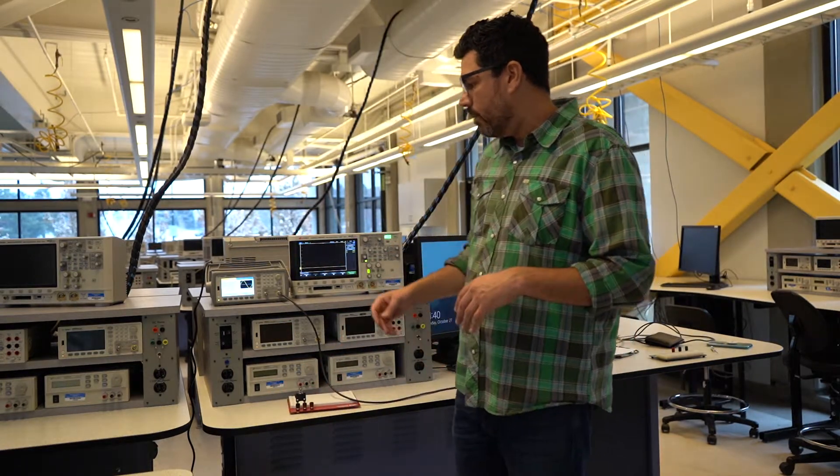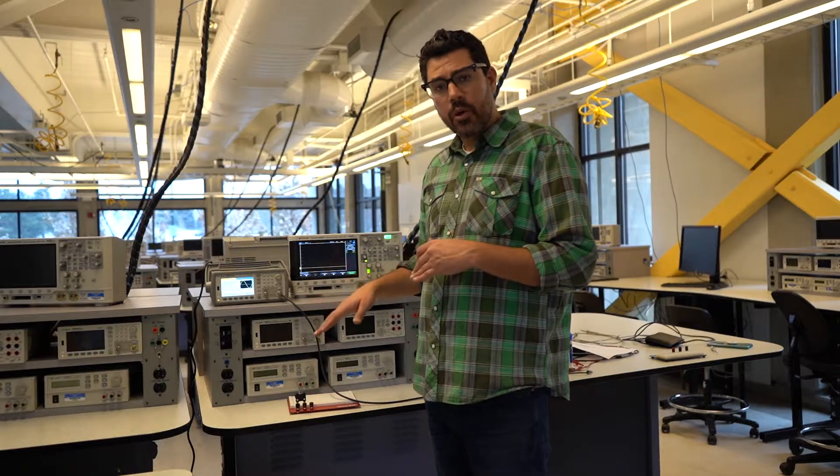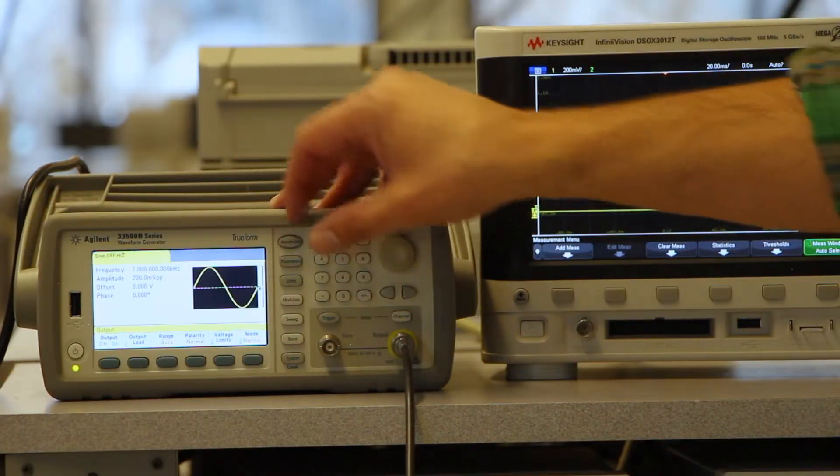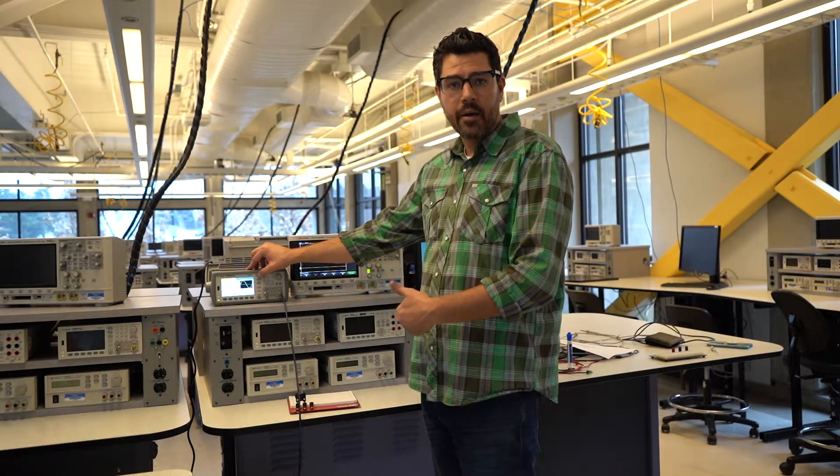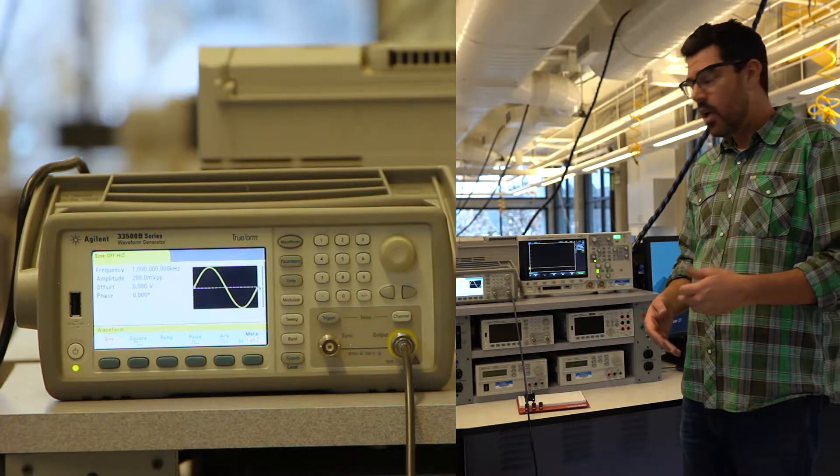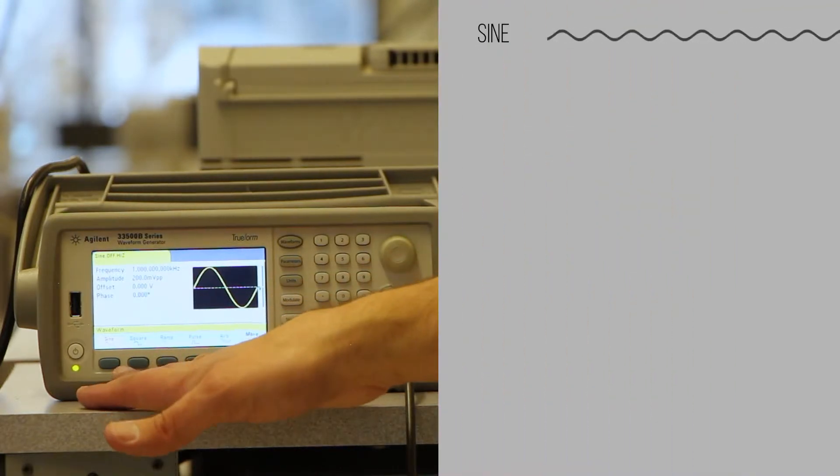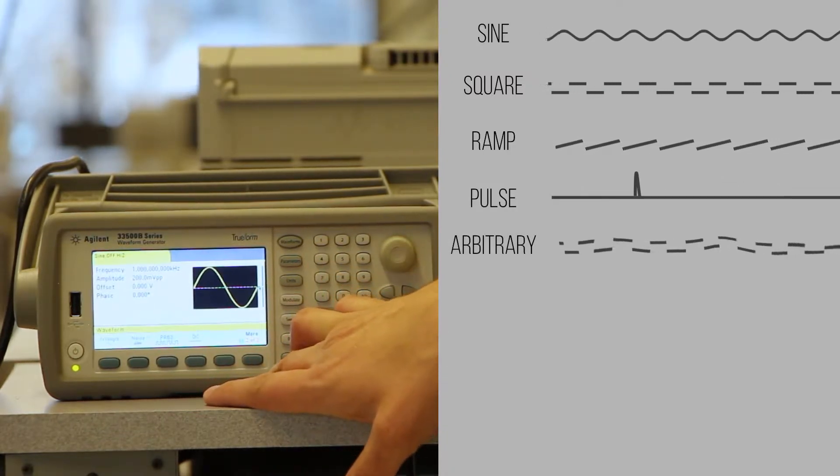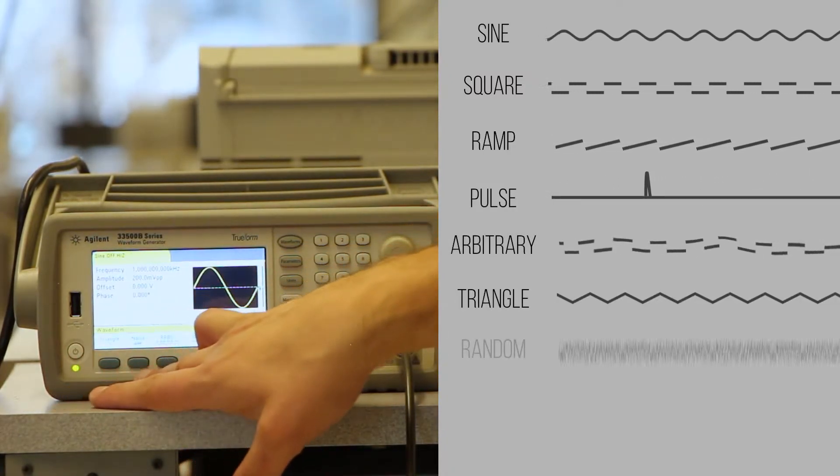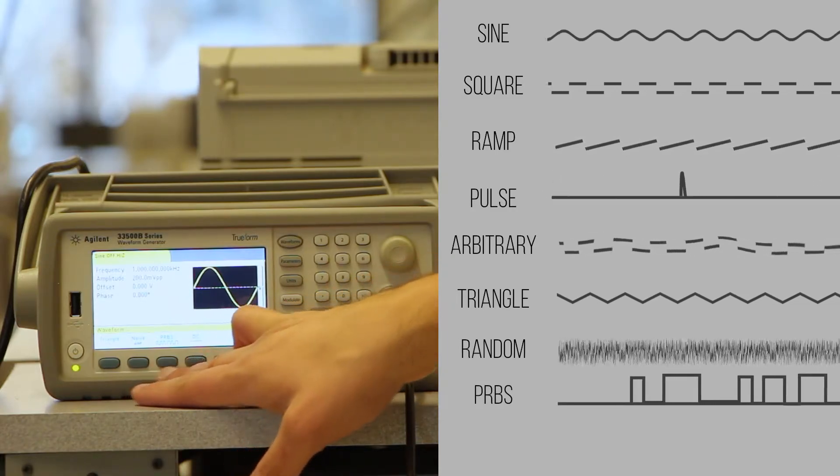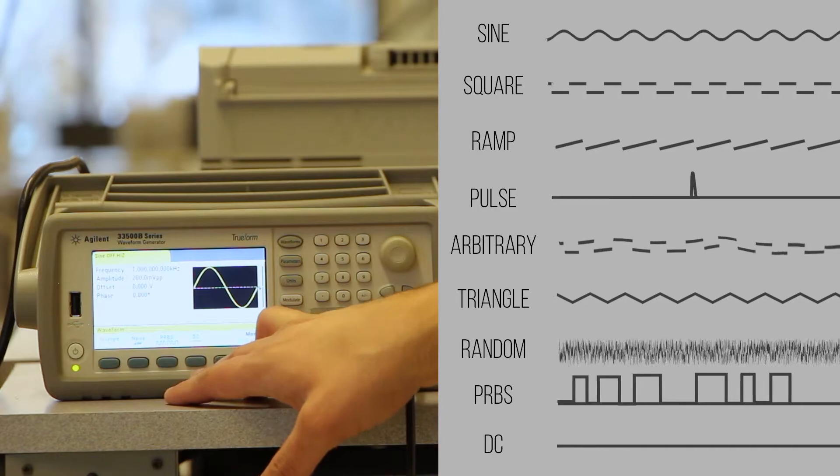Let's talk about creating a waveform. The first thing we want to do is, we're going to look at these vertical column of buttons. I'm just going to go from top to bottom. The very first one is waveform. Choose a waveform. Look at all these options I have. I have sine, square, ramp, pulse, arbitrary waveform, and I can even go more. I've got triangle, random noise, pseudo-random binary sequence, PRBS, and even a constant voltage, which is DC.